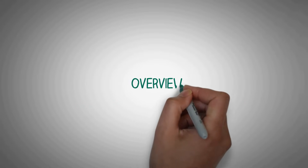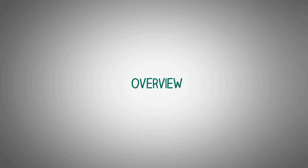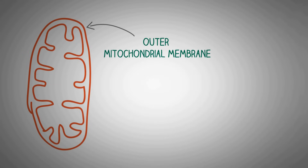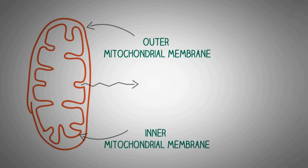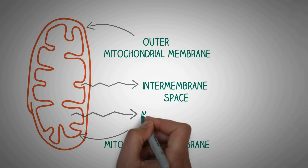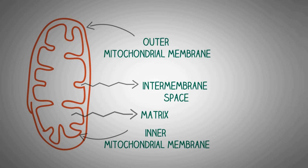Now let's talk about the overview of the electron transport chain first. The mitochondria has an outer mitochondrial membrane and an inner mitochondrial membrane. The space between these membranes is called the intermembrane space, and inside we have the matrix of the mitochondria. If we look at a cross section of the membrane structure of the mitochondria, we can see the structure of the electron transport chain.